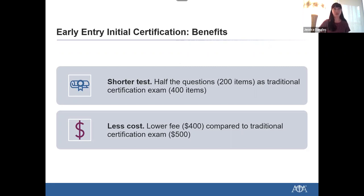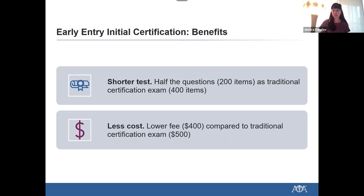Compared to the traditional certification exam that has 400 items, the EEIC has half the questions — 200 items on the exam. Additionally, there is a lower cost: the exam fee is $400 compared to the traditional certification exam of $500. We offered the exam for the first time in March of 2020 and had over 300 candidates take the exam. We heard a lot of positive feedback about the shorter exam as well as the reduced examination fee. Applications for the January 2021 Early Entry Exam are live on our website. Residents also have the option to take the OMT performance exam in the spring of their final year of residency, so all residents could have completed all certification requirements by the end of their residency in June.